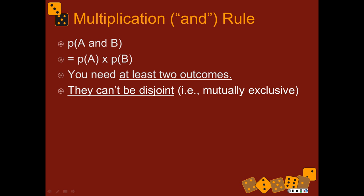For this to work, you need at least two outcomes and they cannot be disjoint. So it doesn't make sense to ask: what's the probability of rolling a 1 and a 4 on one roll of a die? The probability is 0 because it's impossible. I'm going to flip this coin — what's the probability of getting a heads and a tails? It doesn't make sense. So this only makes sense for outcomes that are not mutually exclusive. This simple form of the multiplication rule only works if the events are independent.